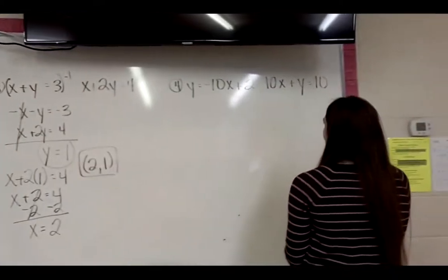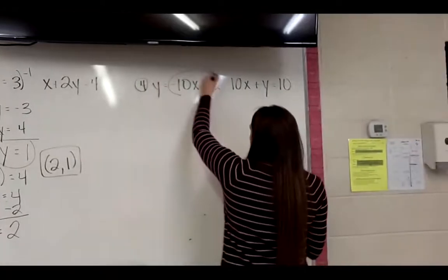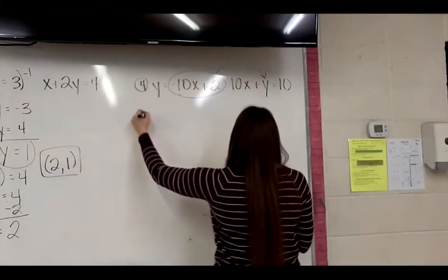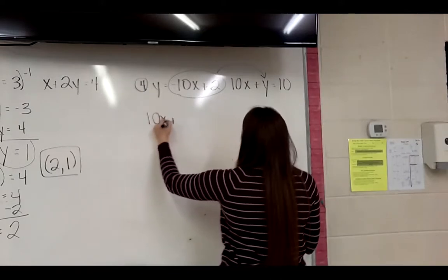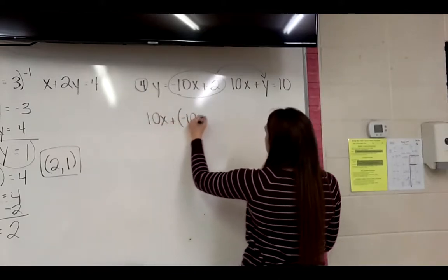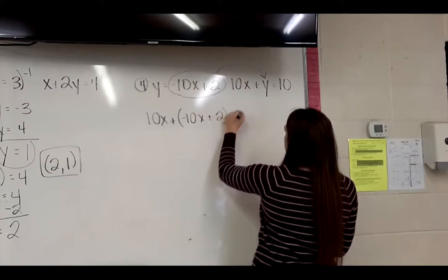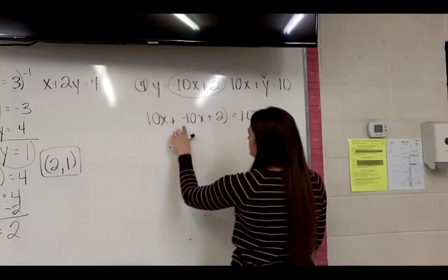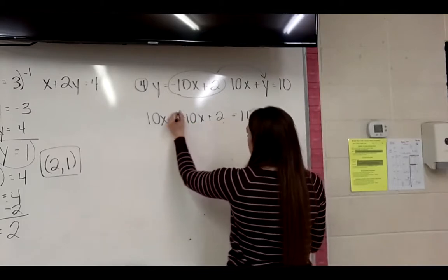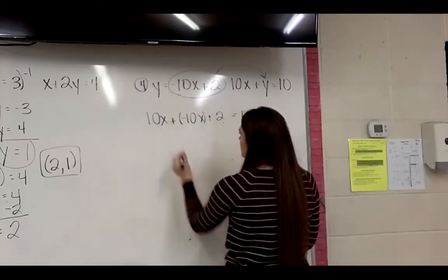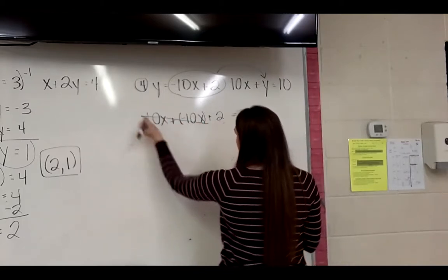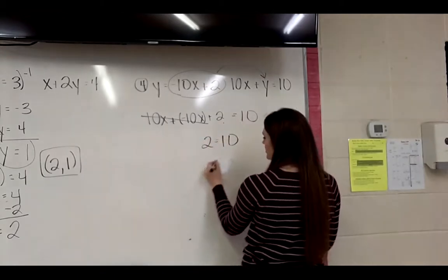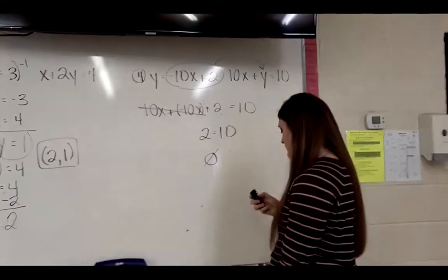On 4, I will do substitution again. So I'm going to take this, plug it in for y on that one. So I have 10x plus negative 10x plus 2 equals 10. Since it's just plus and there's nothing, I can pretty much just drop these parentheses. 10x plus negative 10x cancels. And I'm left with 2 equals 10, which is not true. So no solution.